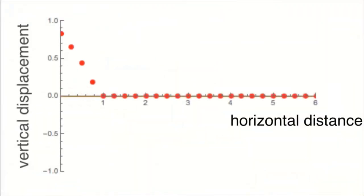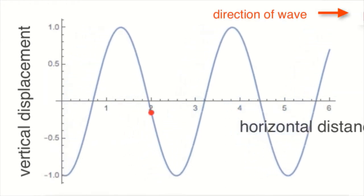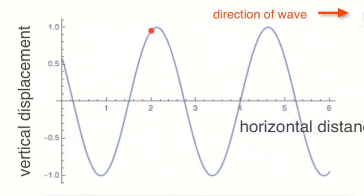In a wave, the individual particles or components of the medium are only temporarily displaced. One particle's temporary displacement causes a nearby particle to temporarily displace and so forth. The particles are not carried by the wave away from their natural position as they return to their original resting position over and over again.